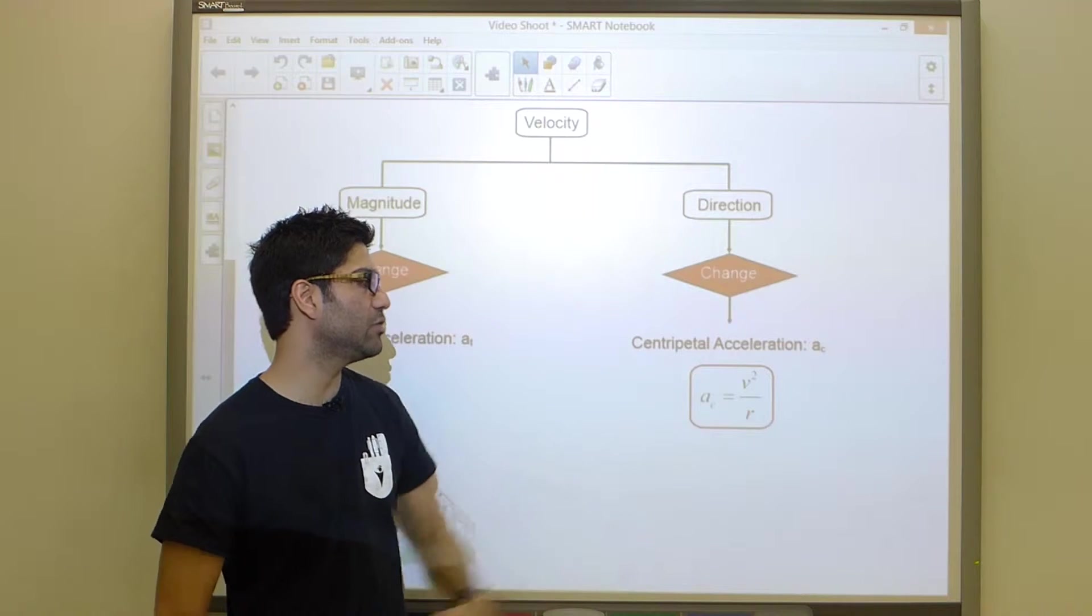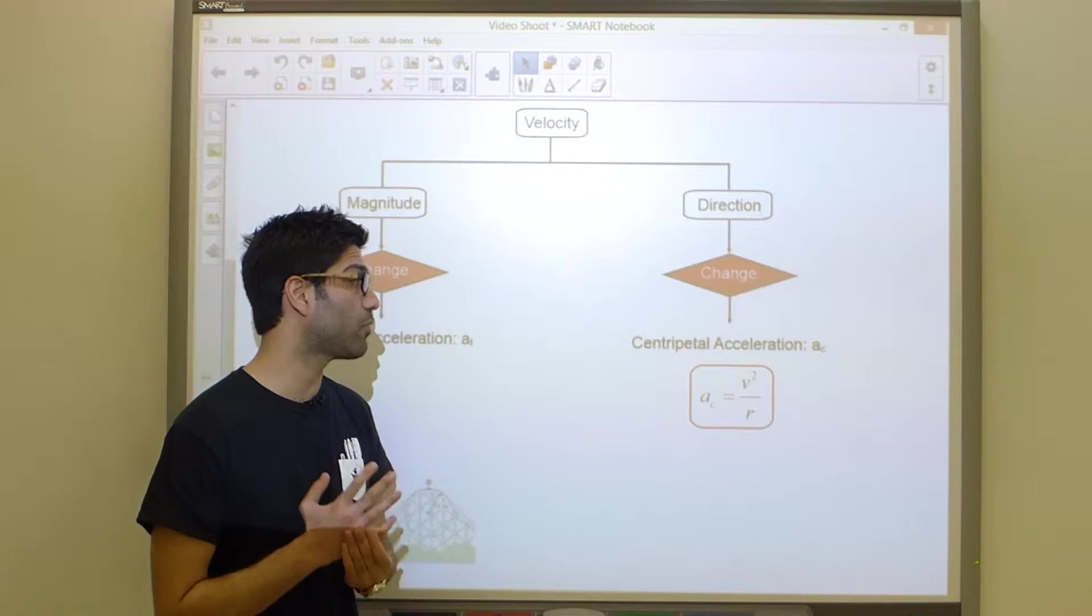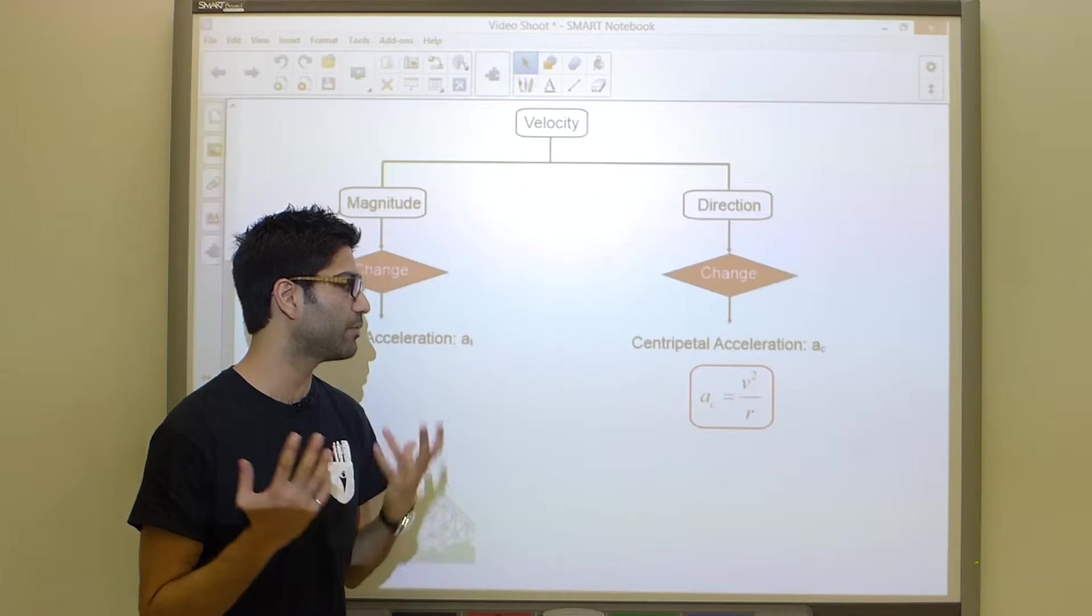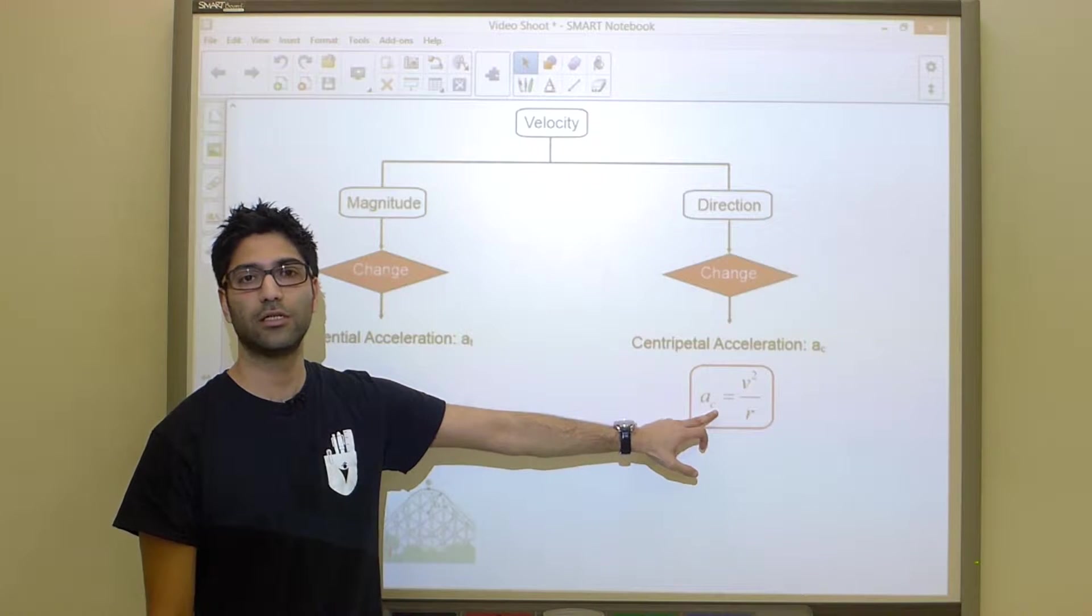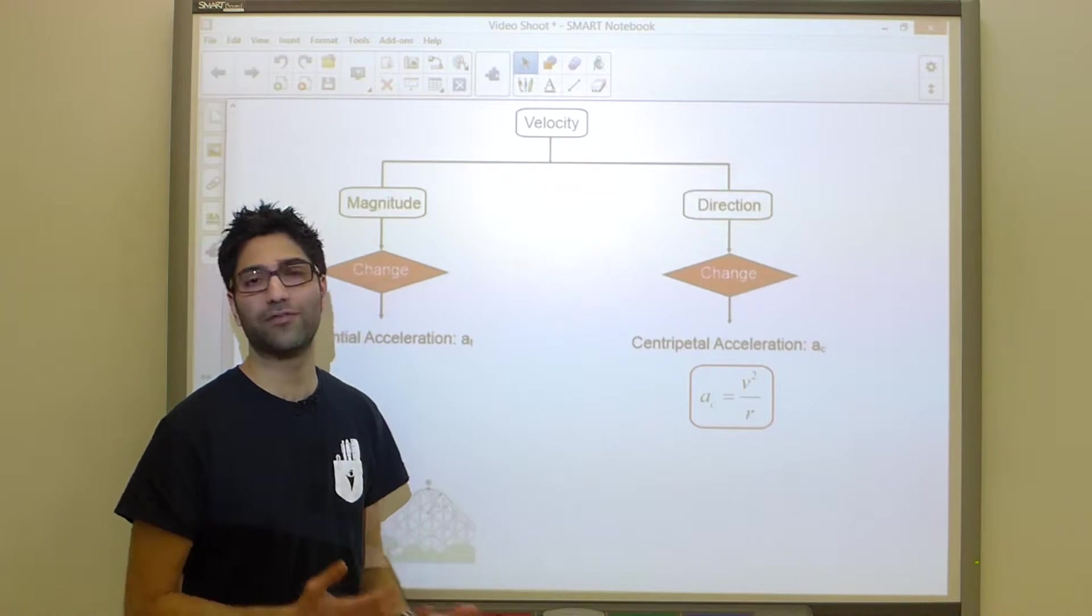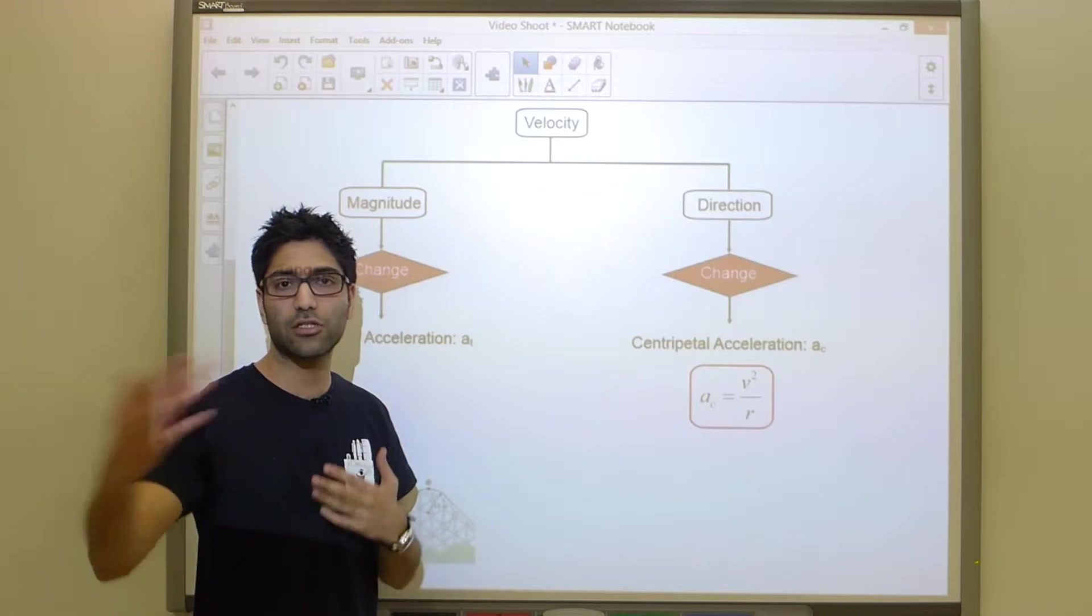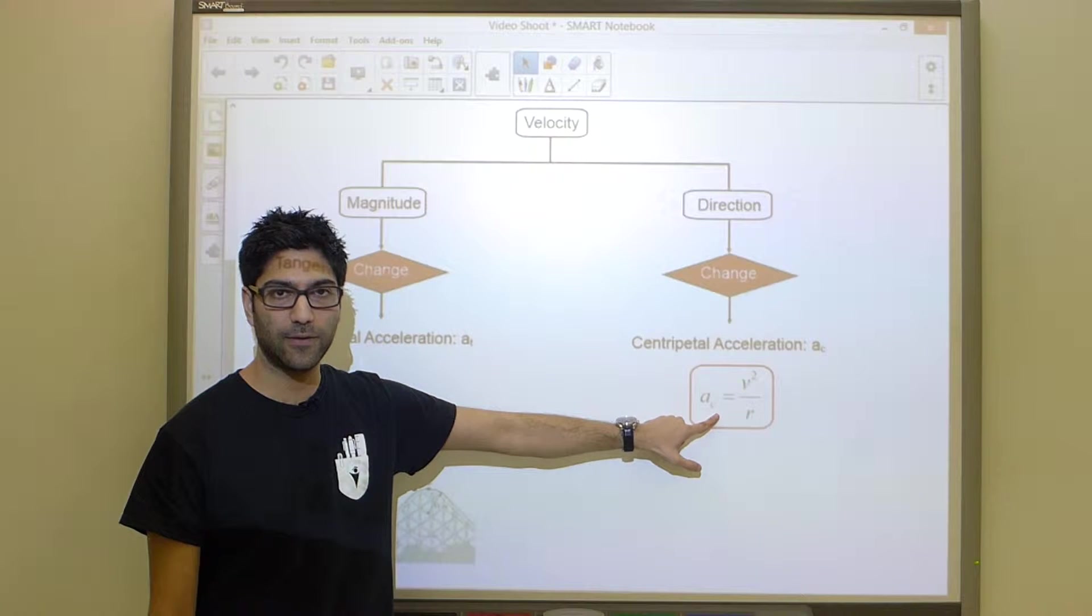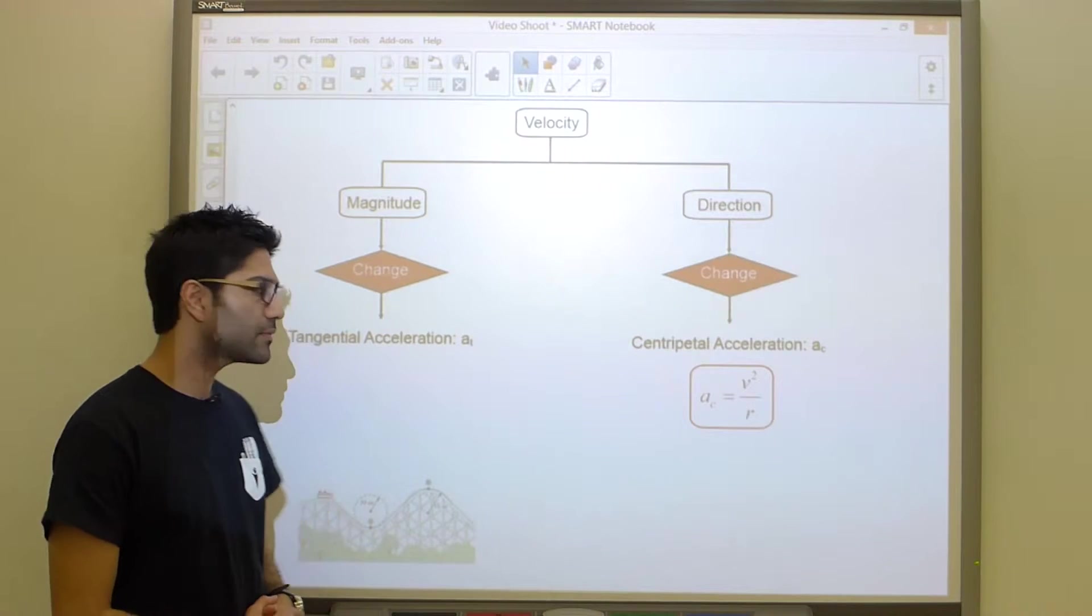The centripetal acceleration, sometimes called radial acceleration, can be calculated as V squared over R. This is something you need to keep in your head. The minute you see a problem with circular motion, you will guaranteed apply this formula. Just like if somebody says constant velocity you say acceleration is zero, the same way if you see a circle you automatically apply this equation.